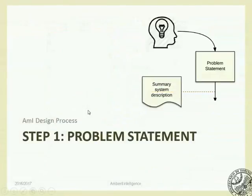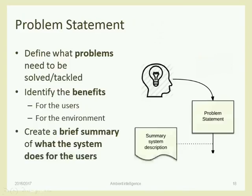Let's start describing the steps one by one. Step one: Problem Statement. We have the idea — a five-to-ten-line description — and we create a description of the system. What are the problems the system is trying to solve? What is my system useful for? What are the benefits it brings to users, to the environment, to developers? So first, you should identify a problem.